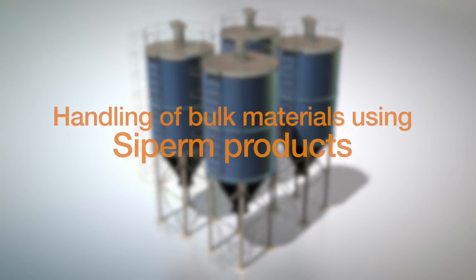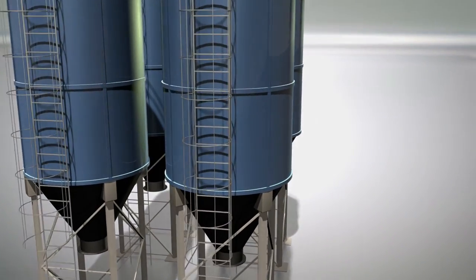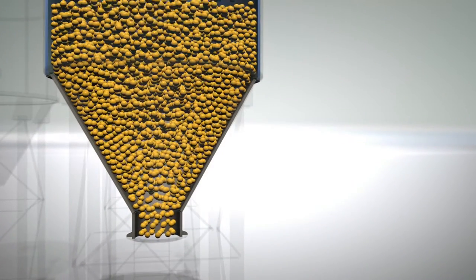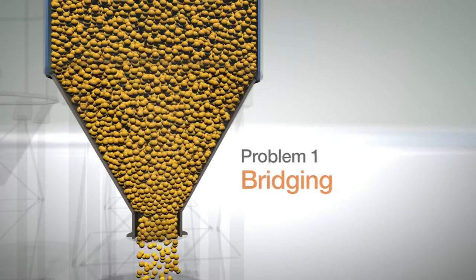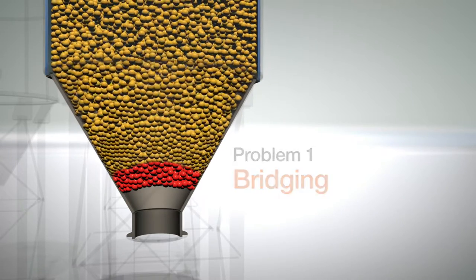An important area of application for ZPEM materials is the fluidization of fine-grained powders. In silo technology, these hardly flowing powders prevent the smooth discharge from the bin. The simulation shows examples of common ensuing problems such as bridging or rat-holing, which occur when unloading the silo.